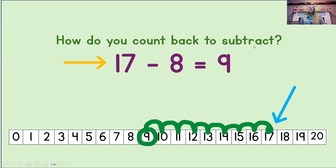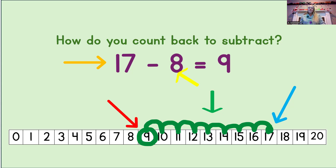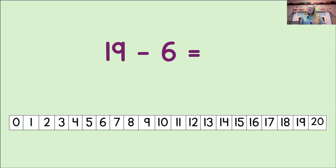Then, we look at the subtrahend. That's the second number in the equation, and we count back on the number line by that number. In this equation, that number is 8, so we count back 8. Then, we circle the answer. That's the place that we land on the number line, and for this equation, it's the number 9. Then, we write that answer into the equation, so now we know 17 take away 8 equals 9.